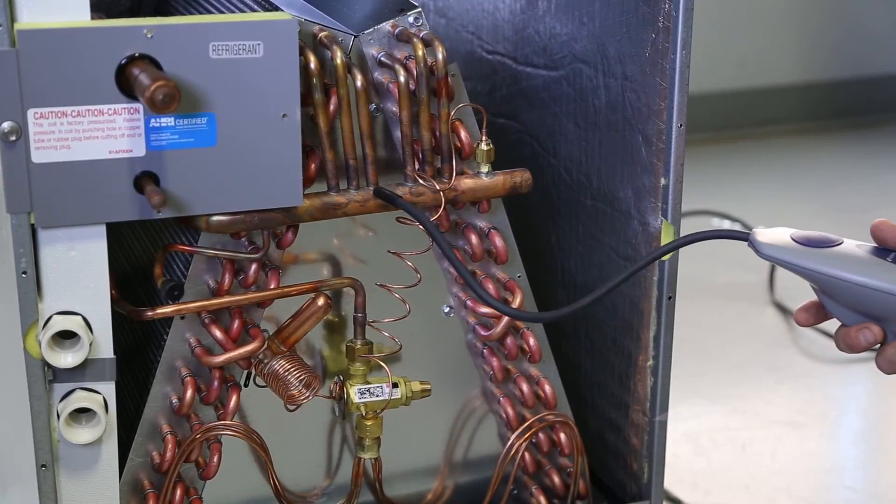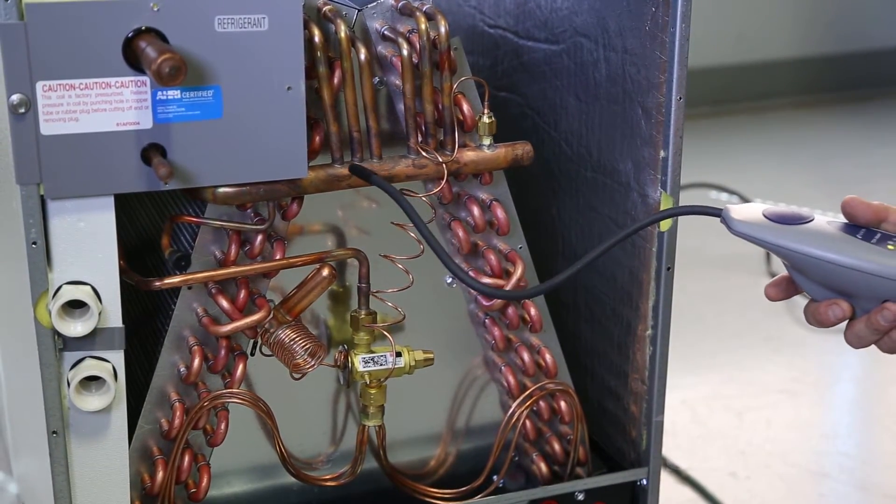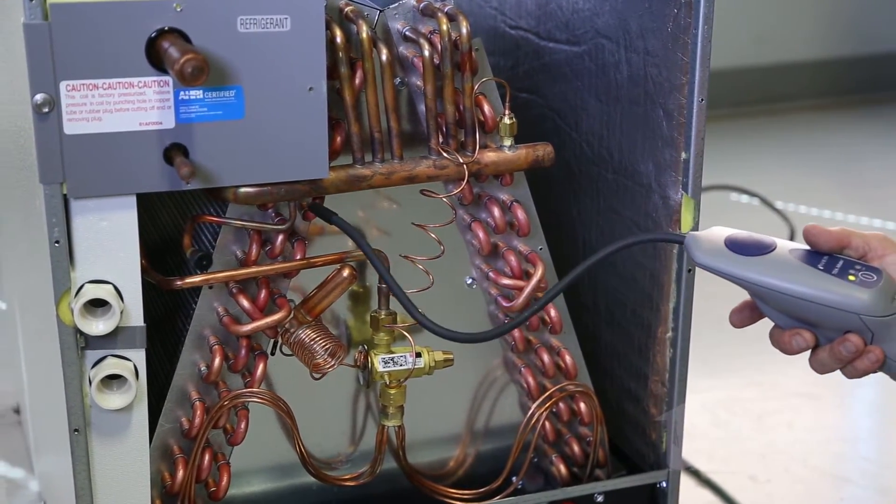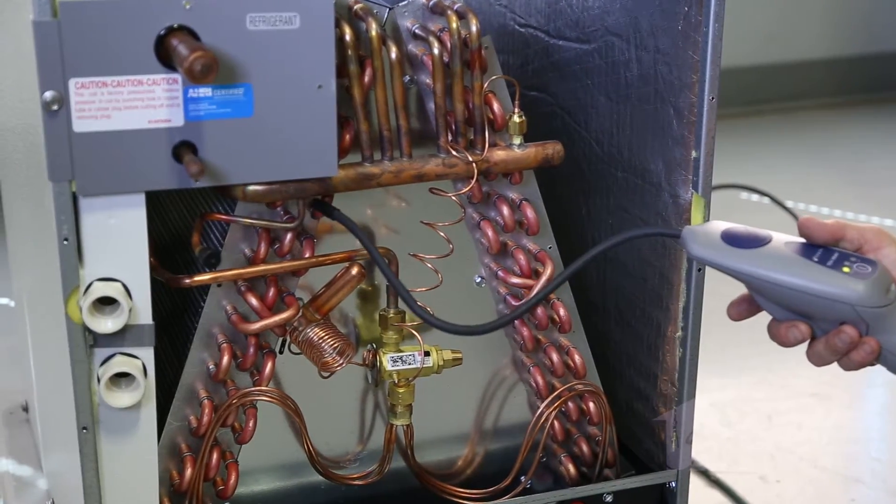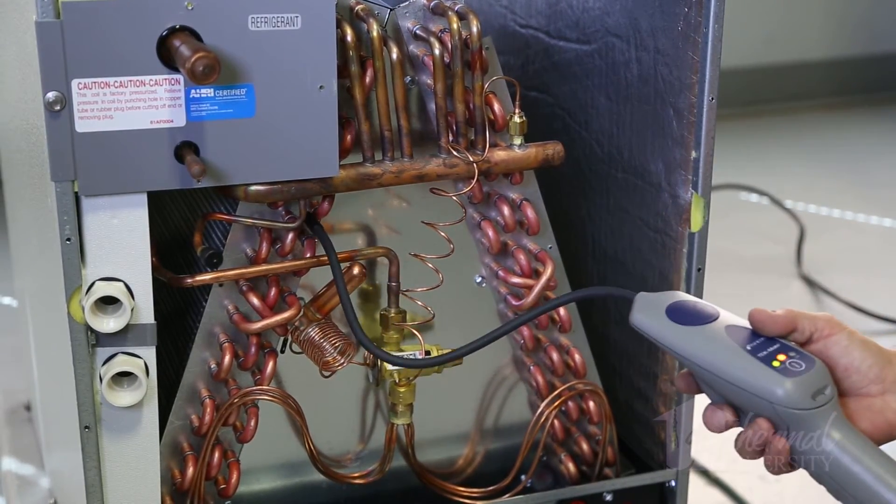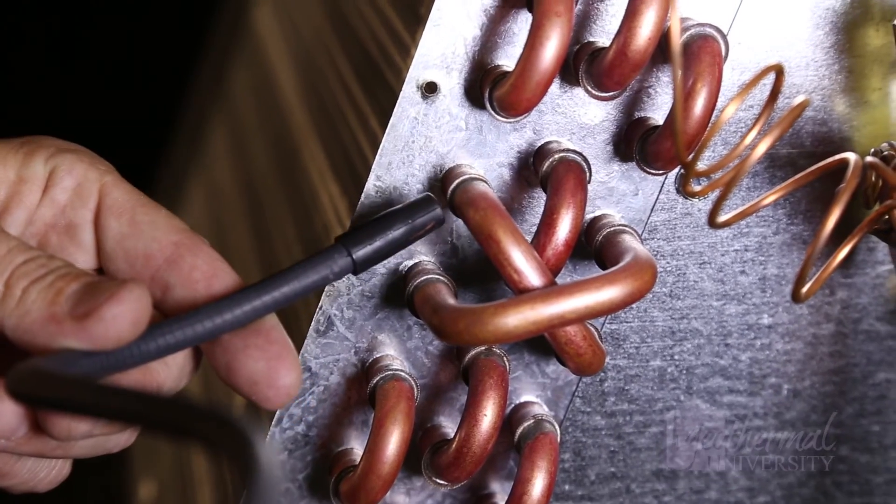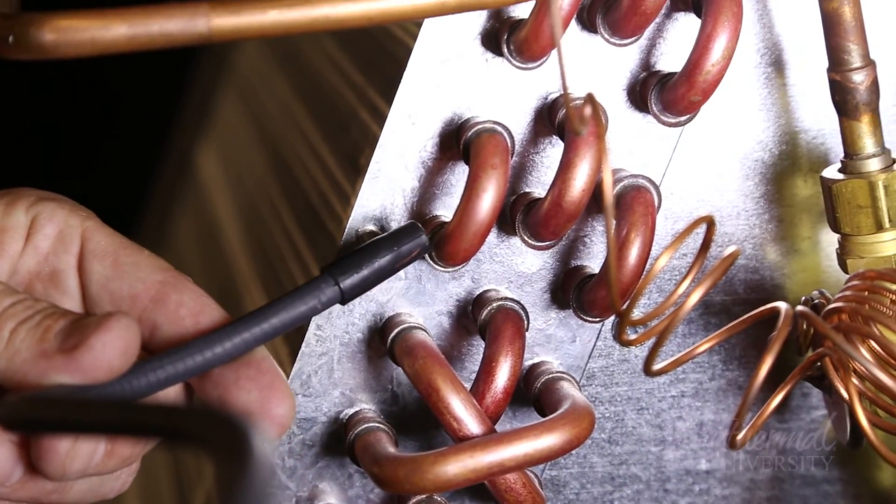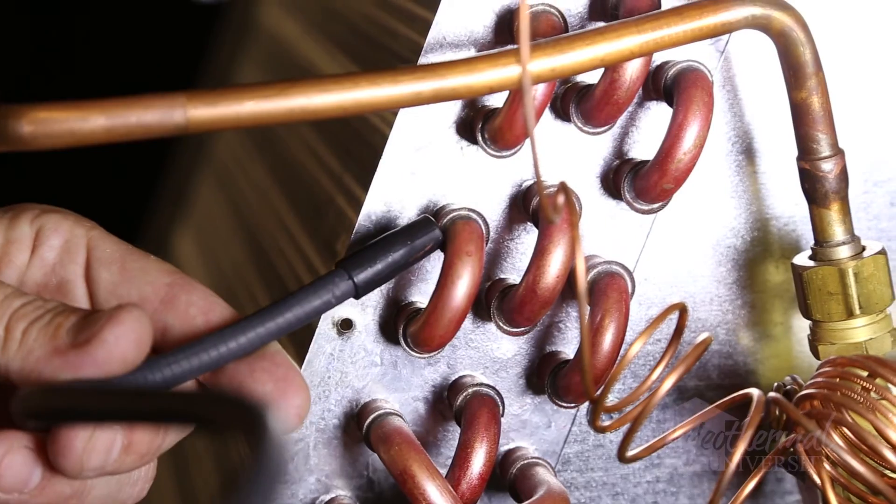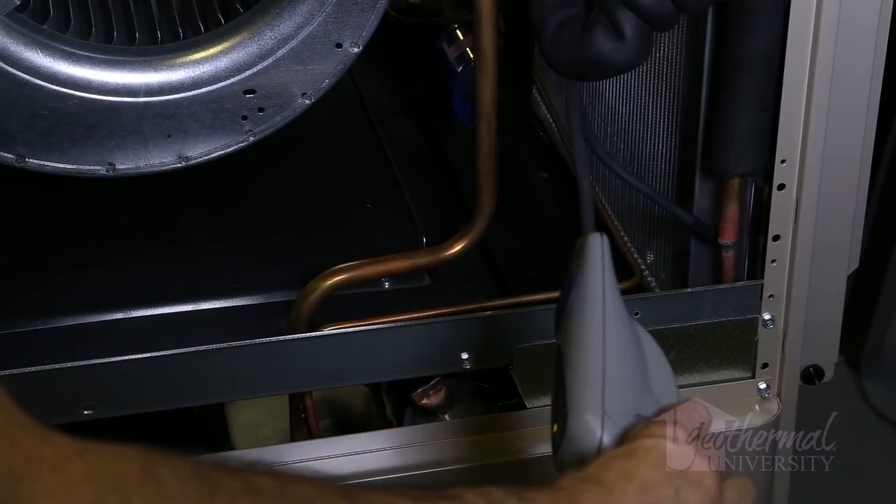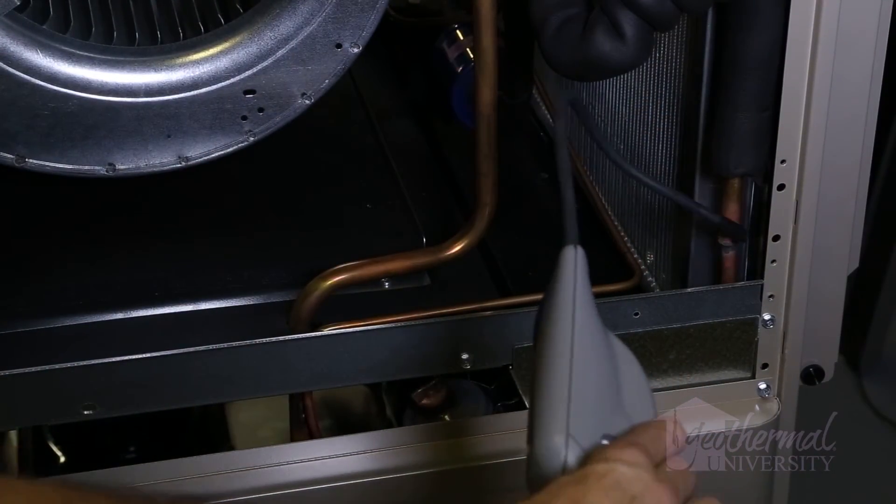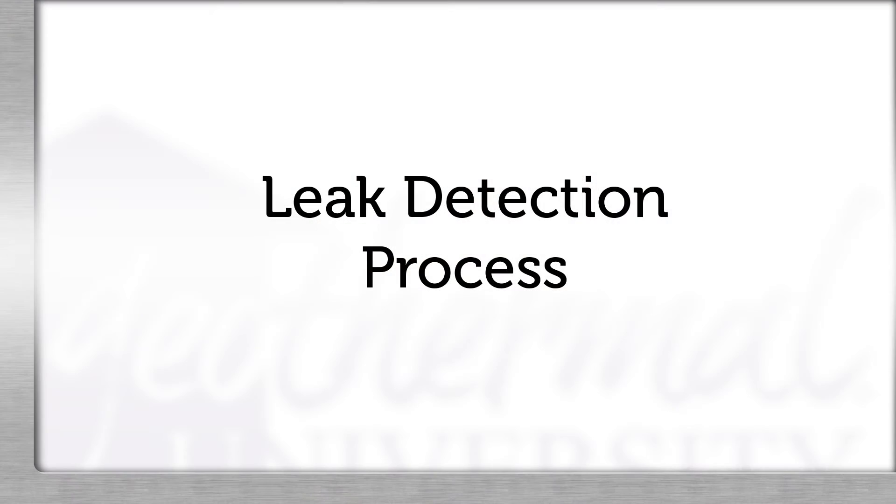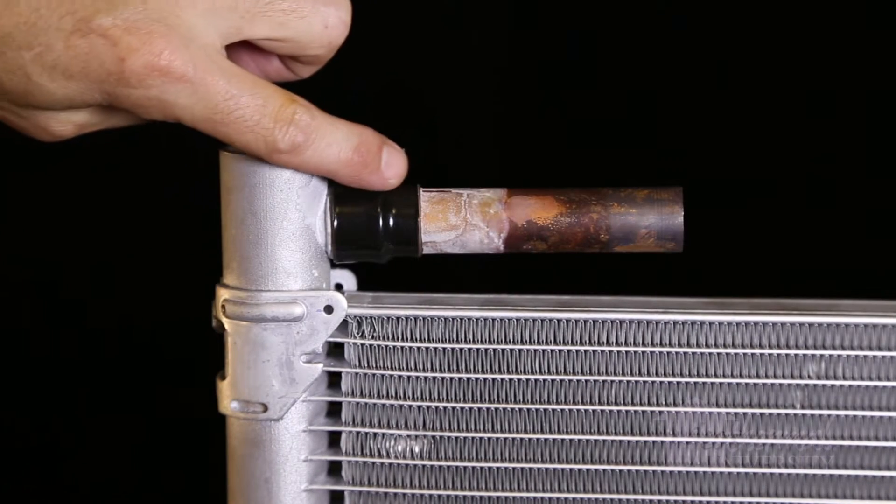For example, you wouldn't expect a leak in a straight section of tubing. A more likely leak would be a braze joint, transition joint, or mechanical fitting. For this reason, you wouldn't typically expect to find a leak in a coil slab. A more likely leak location would be the inlet, outlet, or return bends if equipped. Begin the leak detection process by inspecting all mechanical fittings and braze joints.